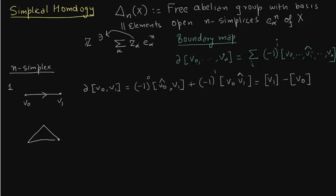Now take a two cell. So this is a triangle. Now obviously the boundary of the triangle are the three edges: v0 v1, v1 v2, and v0 v2.